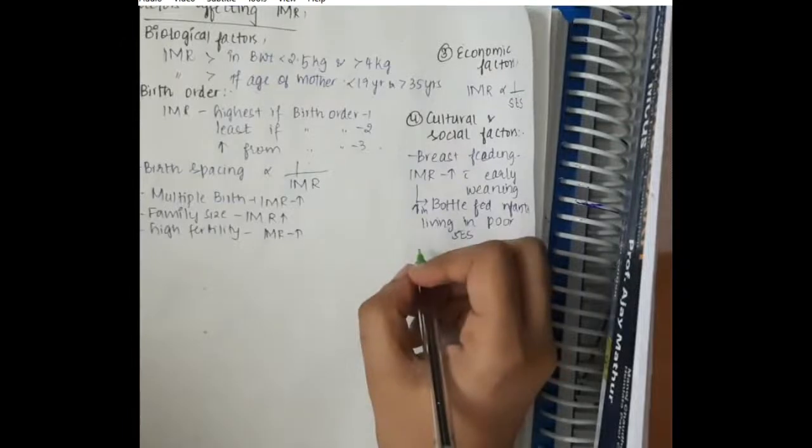Because in these infants who have weaned early or in bottle-fed infants, in them the nutrition and the high nutritious content in mother's milk is not given to the baby. And as a result, the child may suffer from malnutrition which is one of the causes for infant mortality rate.